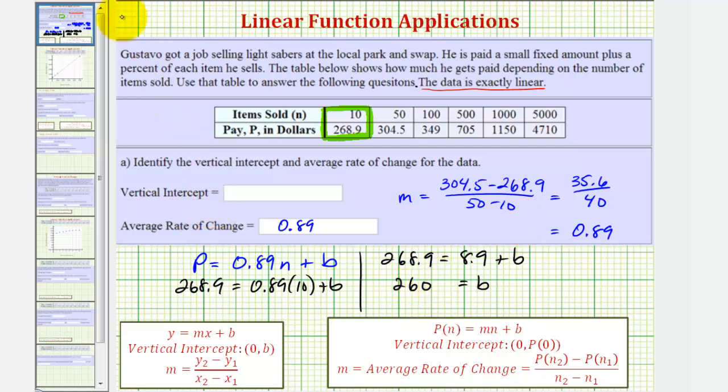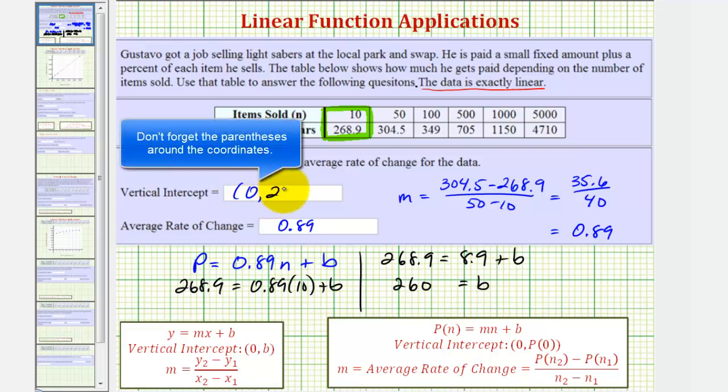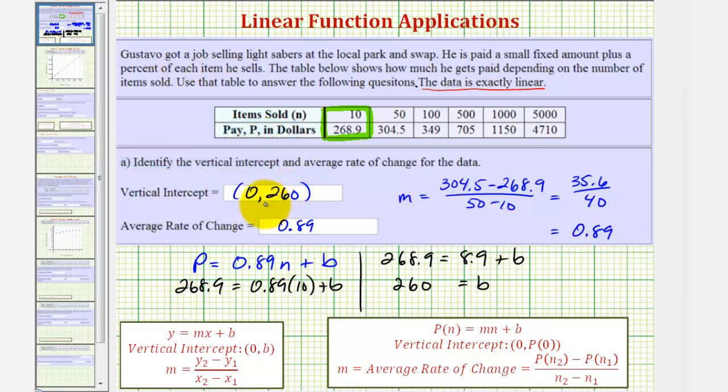Which means the vertical intercept would be the ordered pair 0 comma 260. This tells us if Gustavo sells 0 items, he still gets paid $260, which would be his base salary.